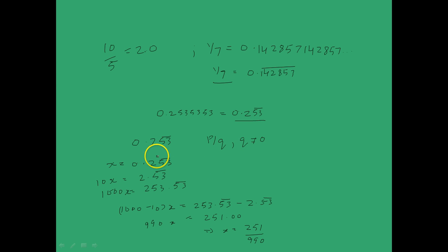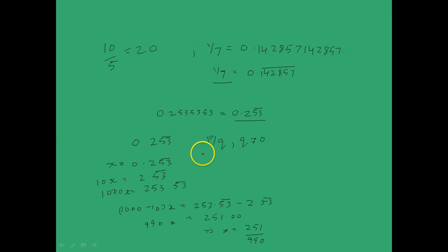So we have represented this number in the form p by q, and in that process proved that a non-terminating repeating decimal is actually a rational number. Let's take one more case just to get familiarized with this notation — say we want to find the p by q representation of 1.25 bar.